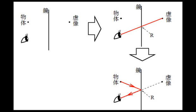鏡の表面での入射点は、虚像と目を結んだ直線と、鏡の表面との交点です。それで、まず虚像と目を結んだ直線を描きます。右上の図、赤い線です。鏡の表面での入射点を求め、入射点にRと記入します。